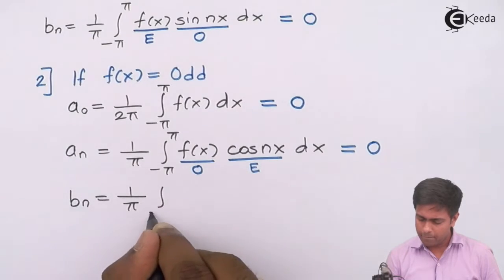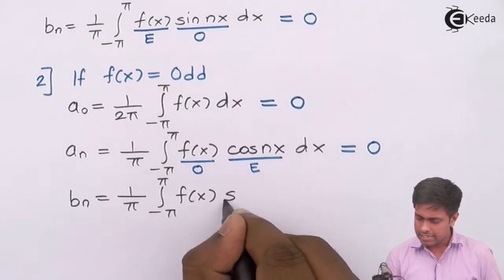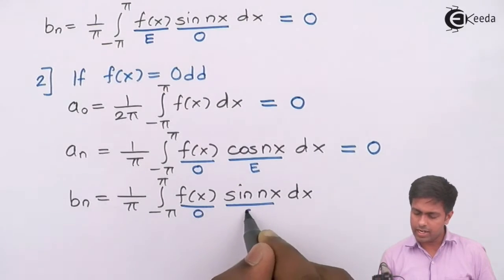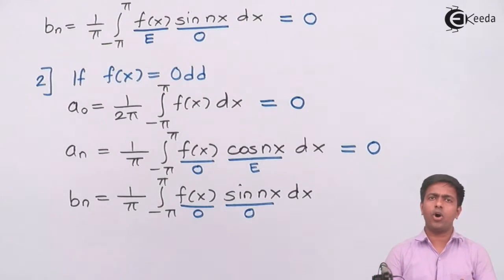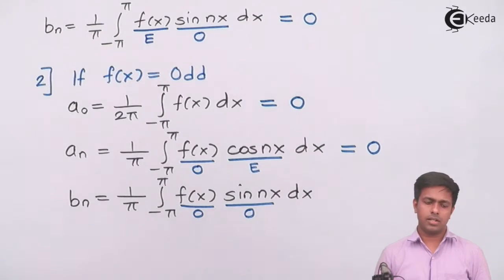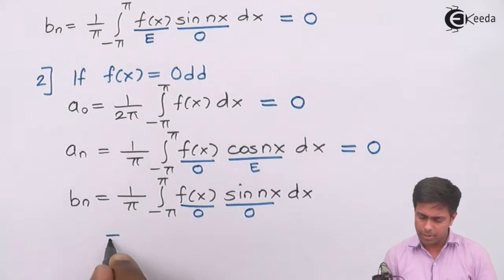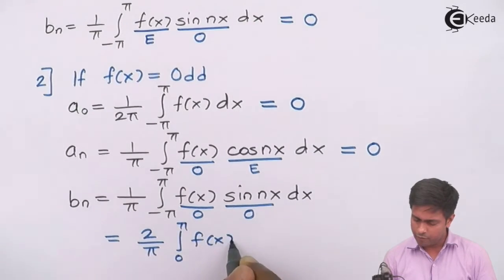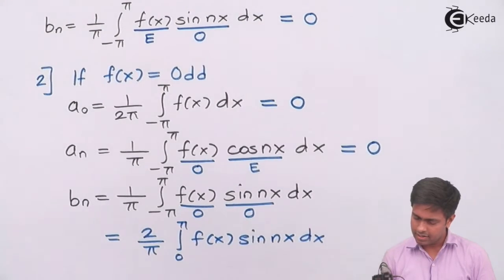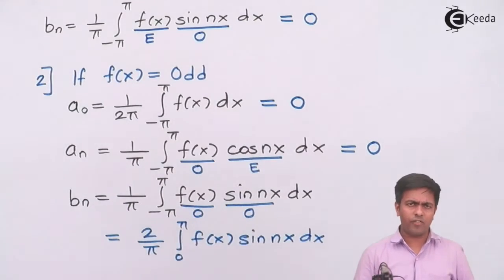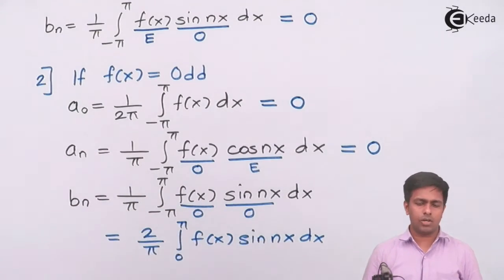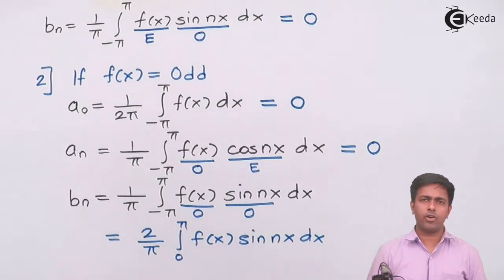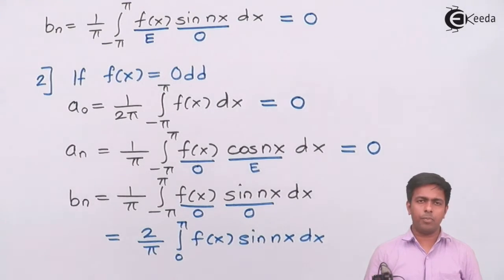For bₙ: the formula is (1/π) times the integration from negative pi to pi of f(x) sin(nx) dx. Here f(x) is odd and sin(nx) is also odd, and odd multiplied by odd is even. Therefore we apply the even function property: bₙ = (2/π) times the integration from 0 to pi of f(x) sin(nx) dx. Whenever f(x) is odd, a₀ and aₙ are both 0, and we only need to find bₙ, reducing the work significantly.